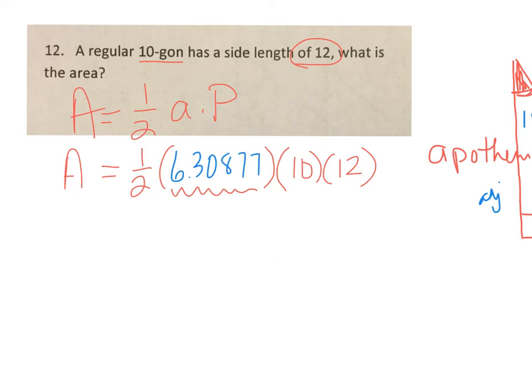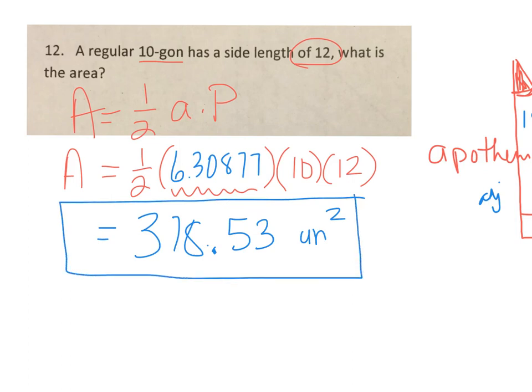That is the missing piece of information I need to figure out the area of this regular 10-gon with a side length of 12. So we put in one half times that apothem times 10 times 12, and we get an area of 378.53 square units. There you go.